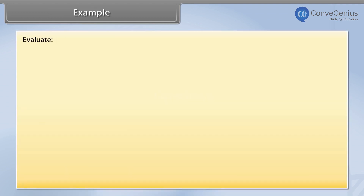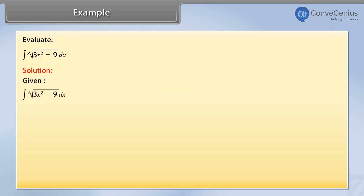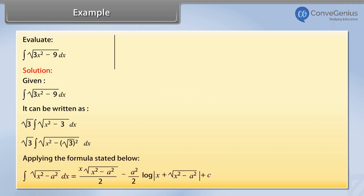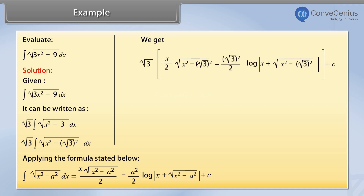Example: Evaluate the integral of √(3x²−9) with respect to x. Solution: Given the integral of √(3x²−9) with respect to x, it can be written as √3 into the integral of √(x²−3) with respect to x. Applying the formula for ∫√(x²−a²)dx, we get √3 into (x/2)·√(x²−3).